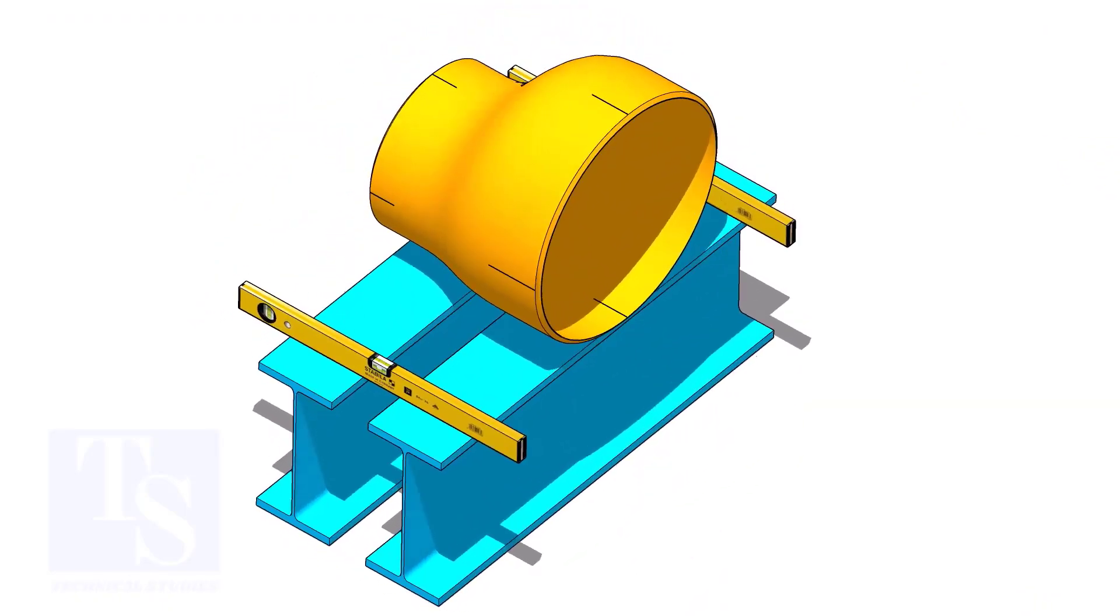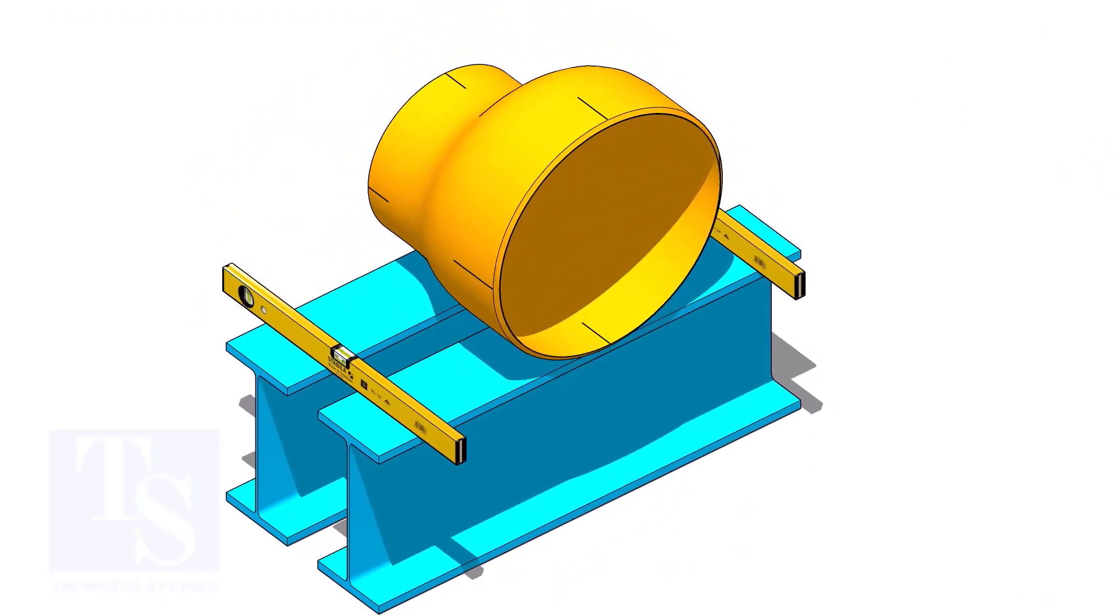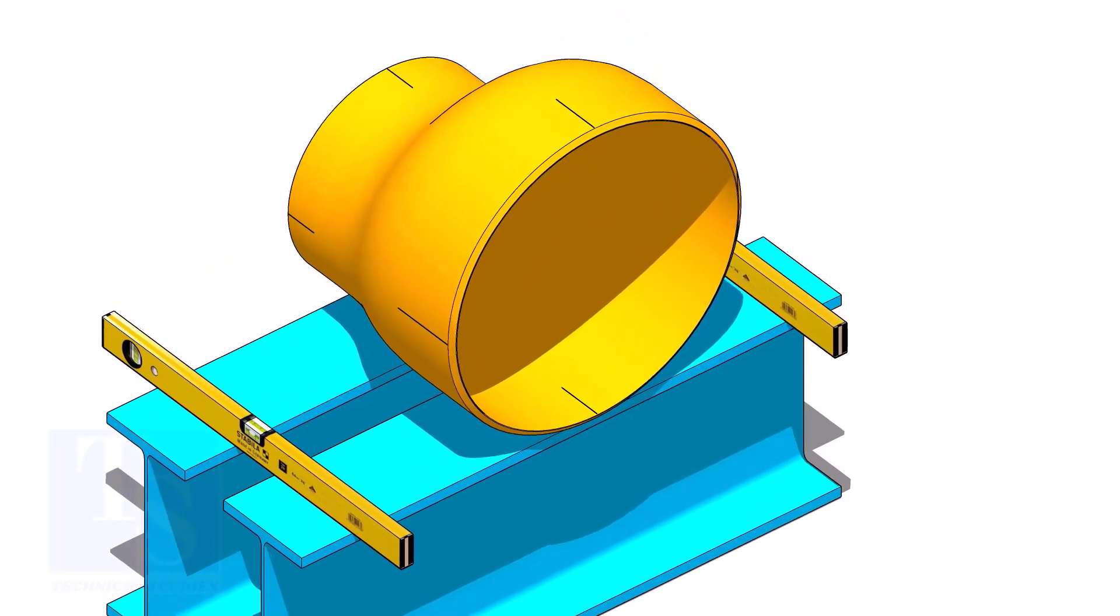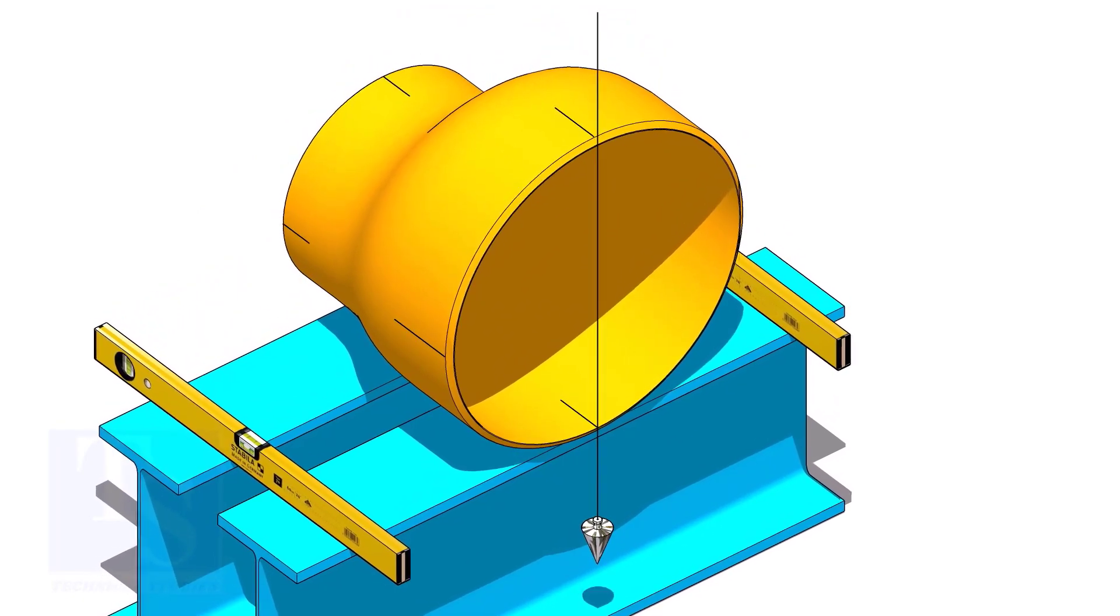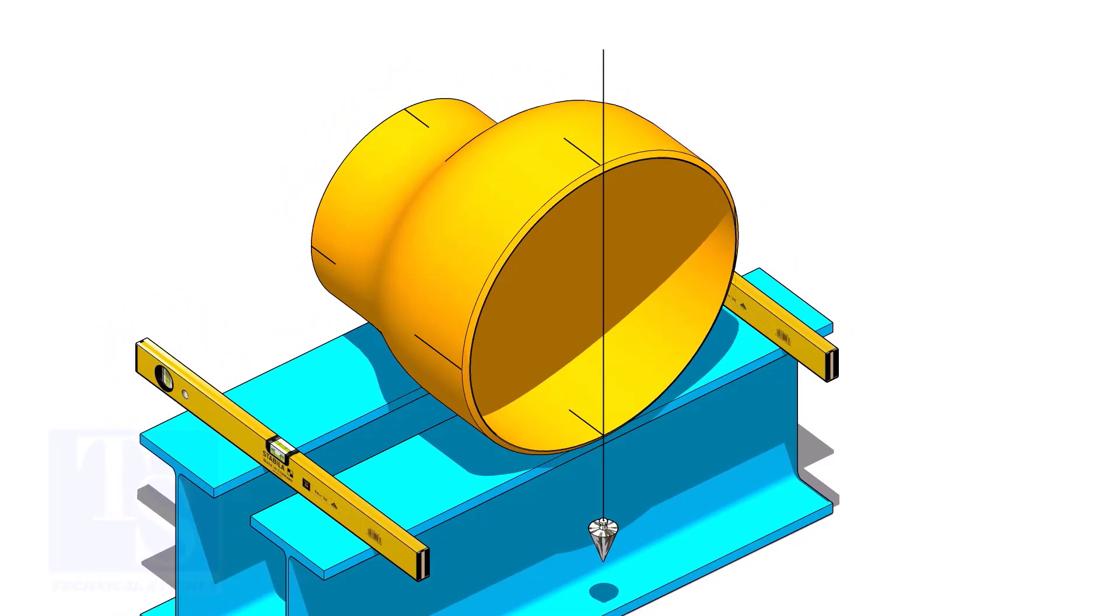Put the reducer on supports. Plumb the reducer and put packing on both sides.